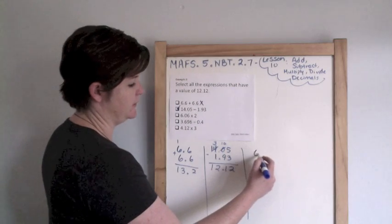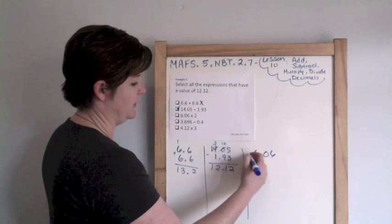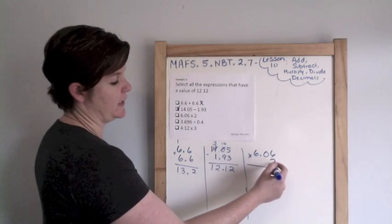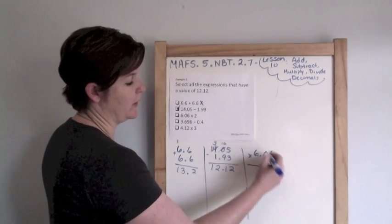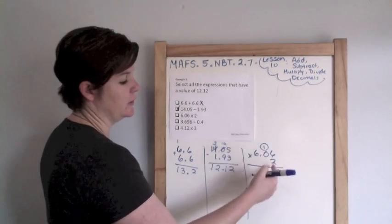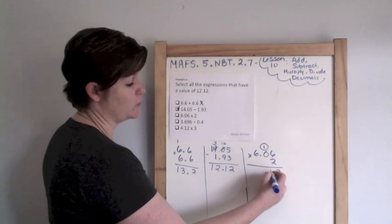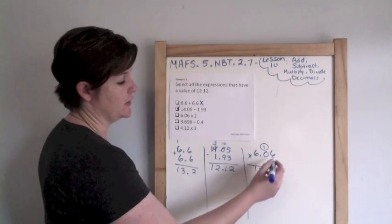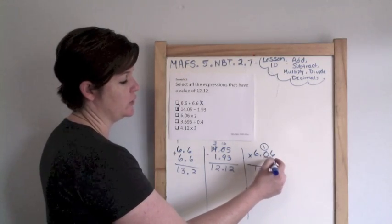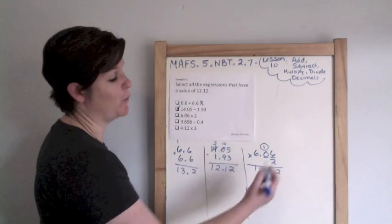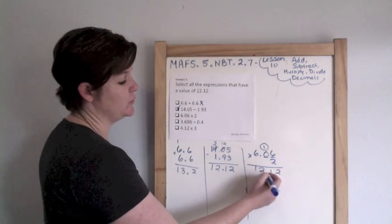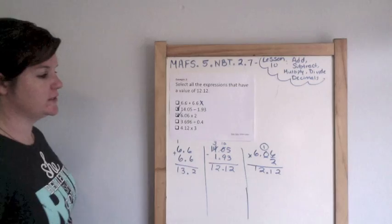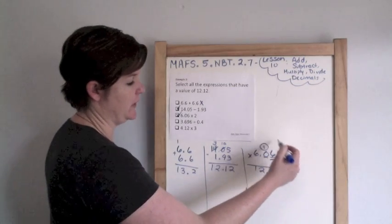All right. Next, 6.06 times 2. 6 times 2 is 12. 2 times 0 is 0 plus 1 is 1. 6 times 2 is 12. Looks good. And here I have 1, 2 numbers behind the decimal point. So that would be 1, 2 numbers behind the decimal point. 12.12. Yes sir.